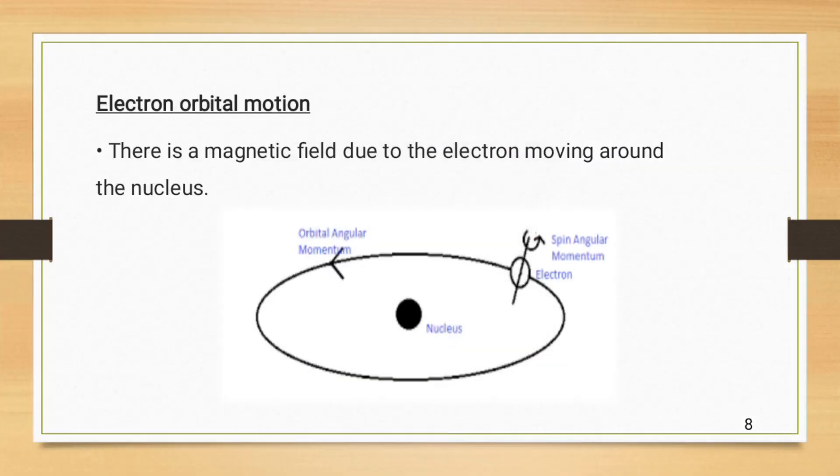Electron orbital motion: There is a magnetic field due to electron moving around the nucleus. We can see in the diagram that there is a nucleus present in the center and around which electron is moving in a circular or in an orbital path around the nucleus and creating electron orbital motion. It also creates magnetic field around it.